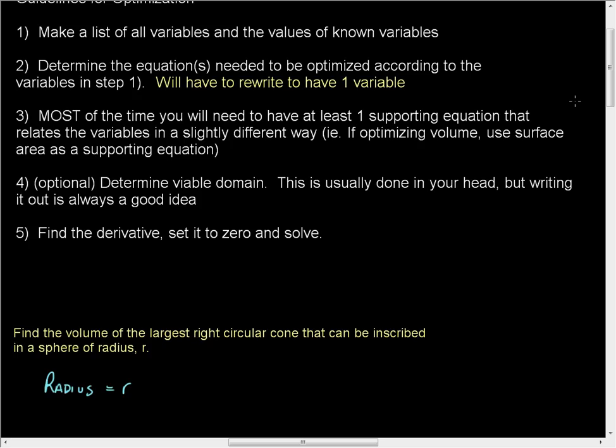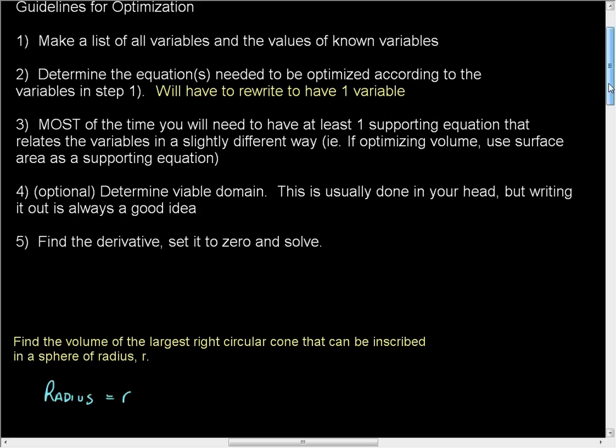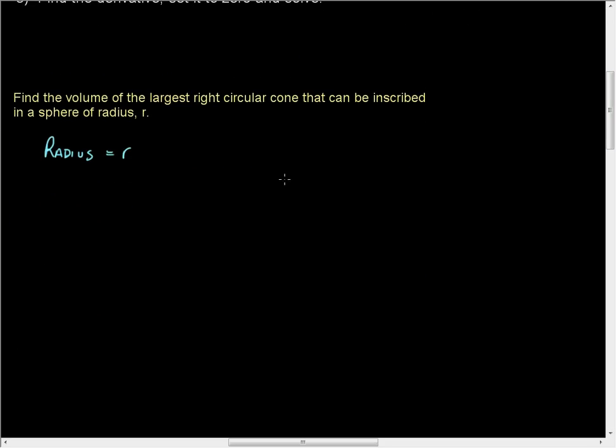Number two, it says determine the equations needed to be optimized according to the variables. Okay, well now we only have a variable, and so I think before we really start labeling our variables, we probably want to get a look as to how this thing might act. And so we'll carefully draw a fairly good sized sphere. So we have its equator coming around front here. So now we have a cone inside that. Now here's the thing: don't suppose anything yet. Simply draw a cone in. Do not put it on the equator because that's probably not going to be where the maximum volume would sit.